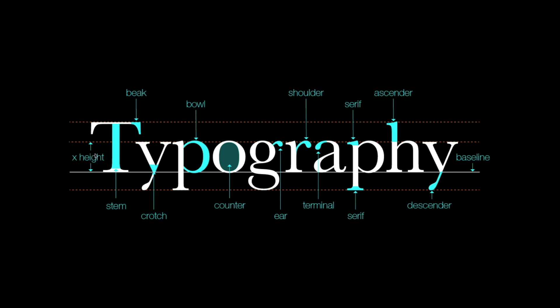Another interesting feature is the ear, found in some letters such as the letter g. An ear is a decorative detail that pokes out from letters like g. We also have a similar element called a shoulder, which is a bumped curve seen in letters like m, n, and r.